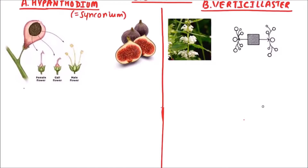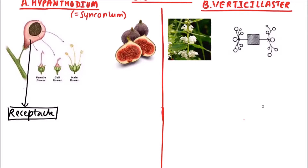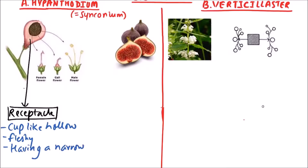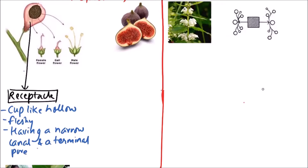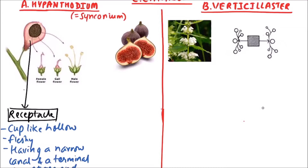First of all, hypanthodium — it is also known as synchronium. In this type of inflorescence, the receptacle is cup-like, hollow, fleshy, and it has a narrow canal and a terminal pore at one end. We can clearly observe in the hypanthodium that this is the fleshy receptacle, here a canal is present, and this is the opening.